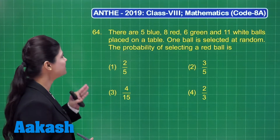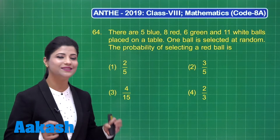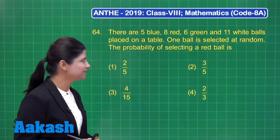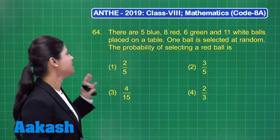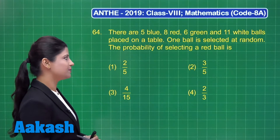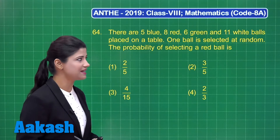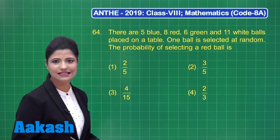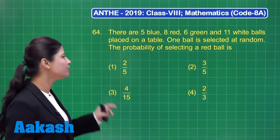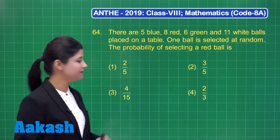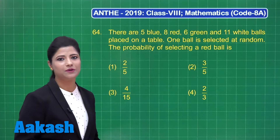Let us take up question number 64. It states that there are 5 blue, 8 red, 6 green and 11 white balls placed on a table. One ball is selected at random. The probability of selecting a red ball is out of these four options where options are 2 upon 5, 3 upon 5, 4 upon 15 and 2 upon 3.